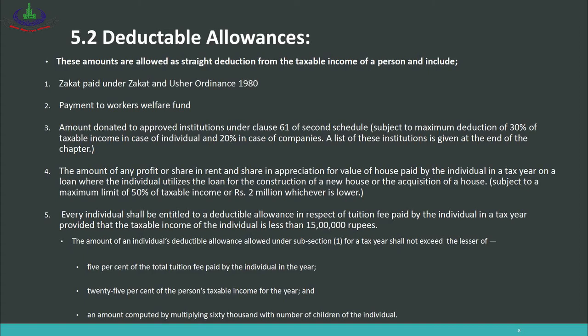Number 4: The amount of any profit or share in rent and share in appreciation of value of a house paid by an individual in a tax year on a loan, where the individual utilizes the loan for the construction of a new house or the acquisition of a house, subject to a maximum limit of 50% of taxable income or rupees 2 million, whichever is lower. So if you take a loan to construct a house and pay interest or profit on it, that amount can be deducted — up to rupees 2 million or 50% of taxable income, whichever is lower.